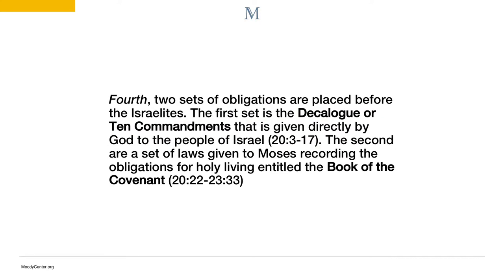Finally, fourth, two sets of obligations are placed before the Israelites. The first set is the Decalogue, or Ten Commandments, that is given directly by God to the people of Israel. The second are a set of laws given to Moses recording the obligations of holy living, entitled the Book of the Covenant.